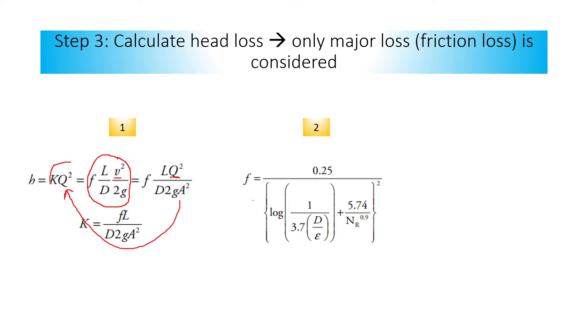When you change v with q over a, you have this formula. q over a is v, right? So in this case k is f l divided by d, 2g a to the power of two.